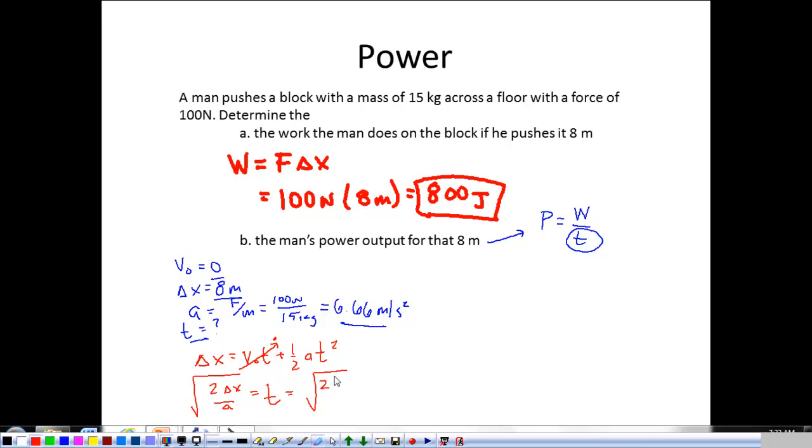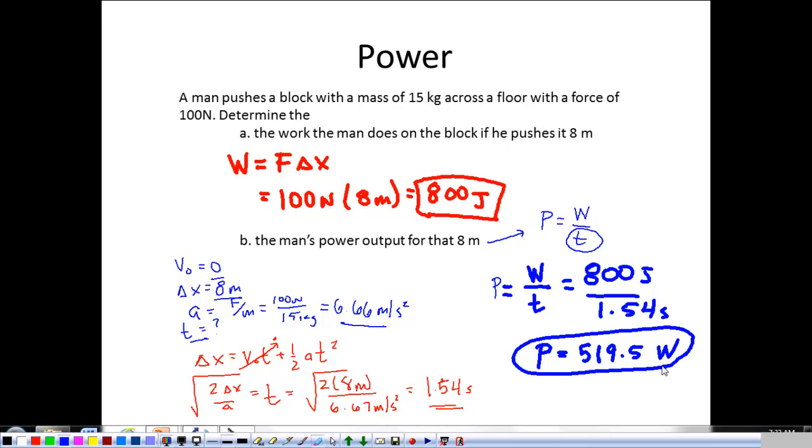So, let's just plug everything in. 2 times 8 meters divided by 6.67 meters per second squared gives me a time of 1.54 seconds. Whew, that was a lot. Now that we have the time, we can come back up here and find the power. Power is work over time. So we're going to take the work that the man did, 800 joules, and divide it by how long it took him to do that, 1.54 seconds. So our power comes out to be 519.5 joules per second, which is going to be watts. That's a very basic power problem.